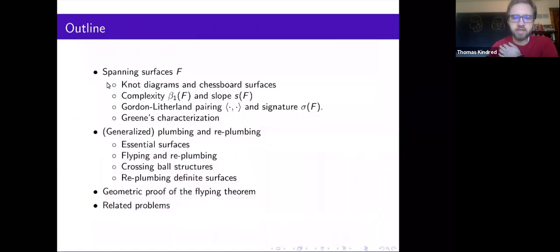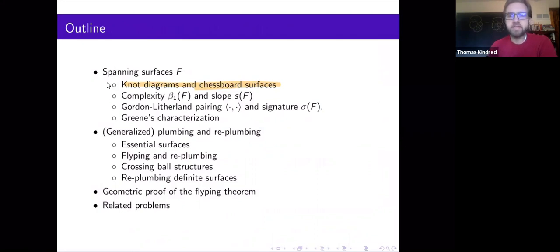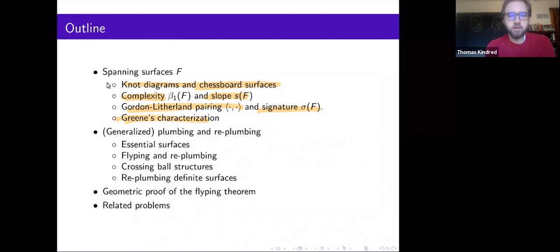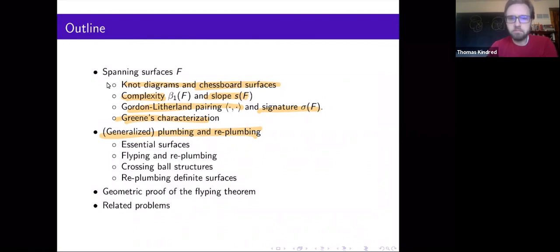At the end of the talk, we're going to discuss related open problems. Here's the plan: I'm going to begin with some background, starting with how knot diagrams correspond to spanning surfaces, in particular chessboard surfaces. I'll discuss the Betti number and the slope, as well as the signature and the Gordon-Litherland pairing, which connects several of these ideas and is how we define definite surfaces, leading to a more precise statement of Greene's characterization. Then I'll talk about plumbing and re-plumbing operations on spanning surfaces — the main geometric tool for giving the first geometric proof of the Flype theorem.